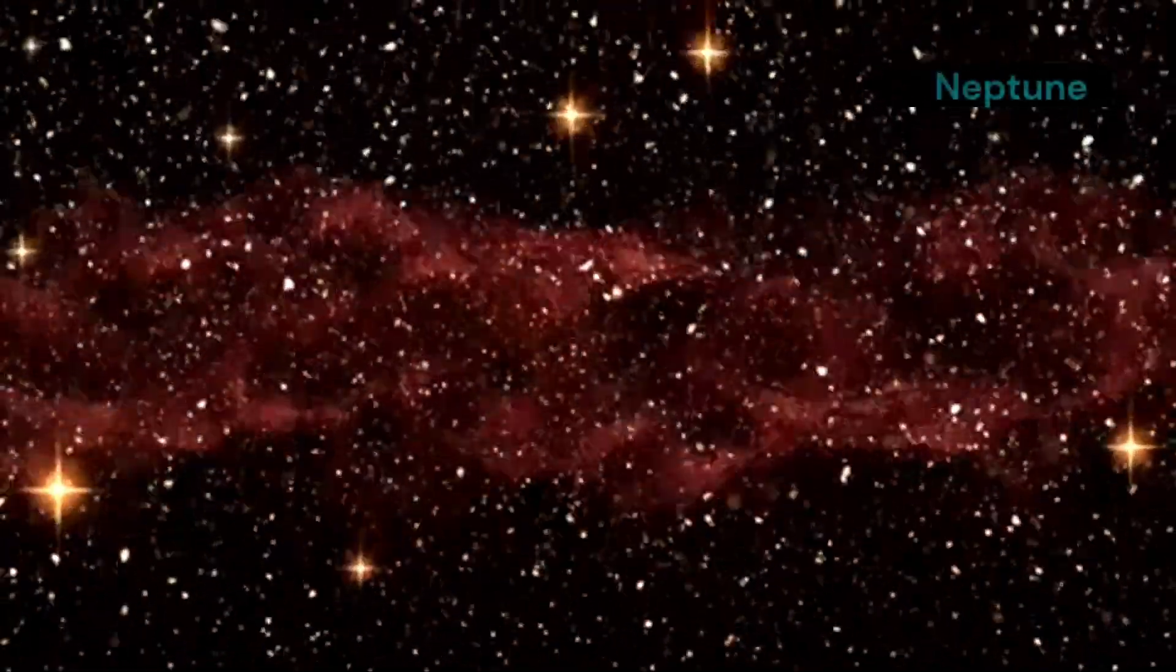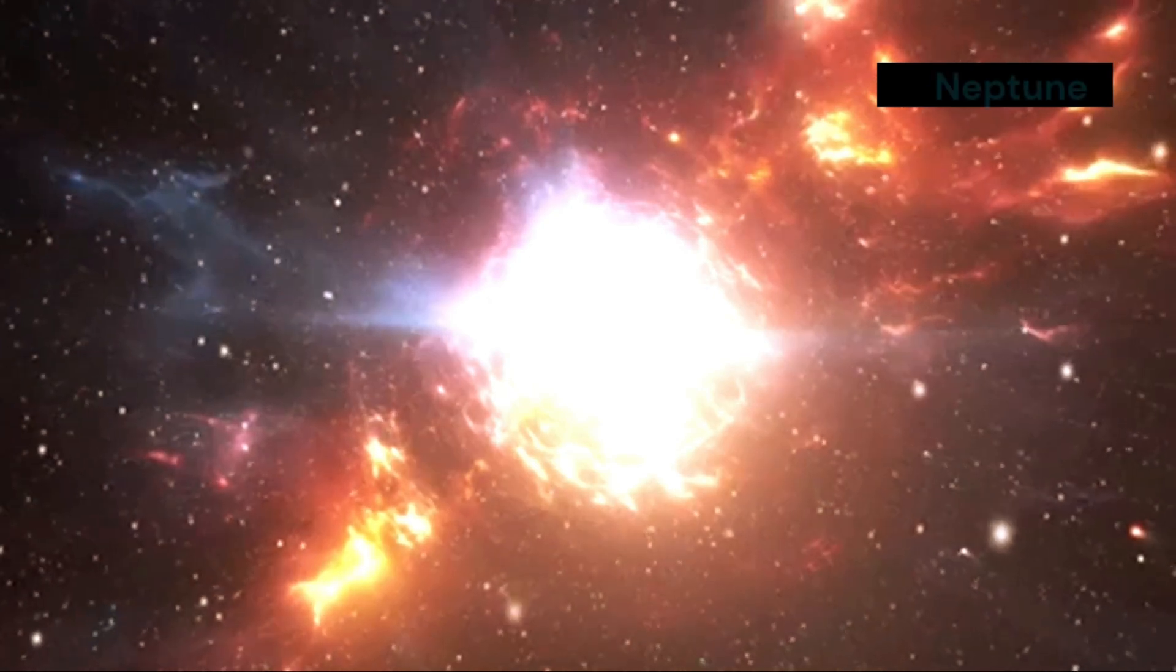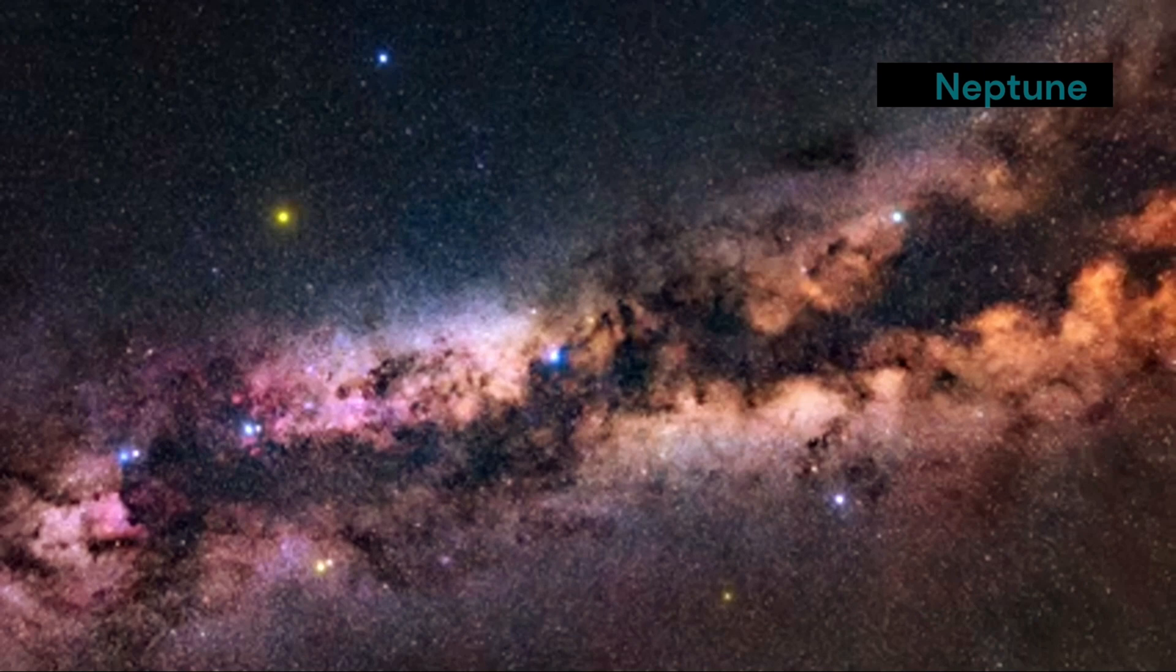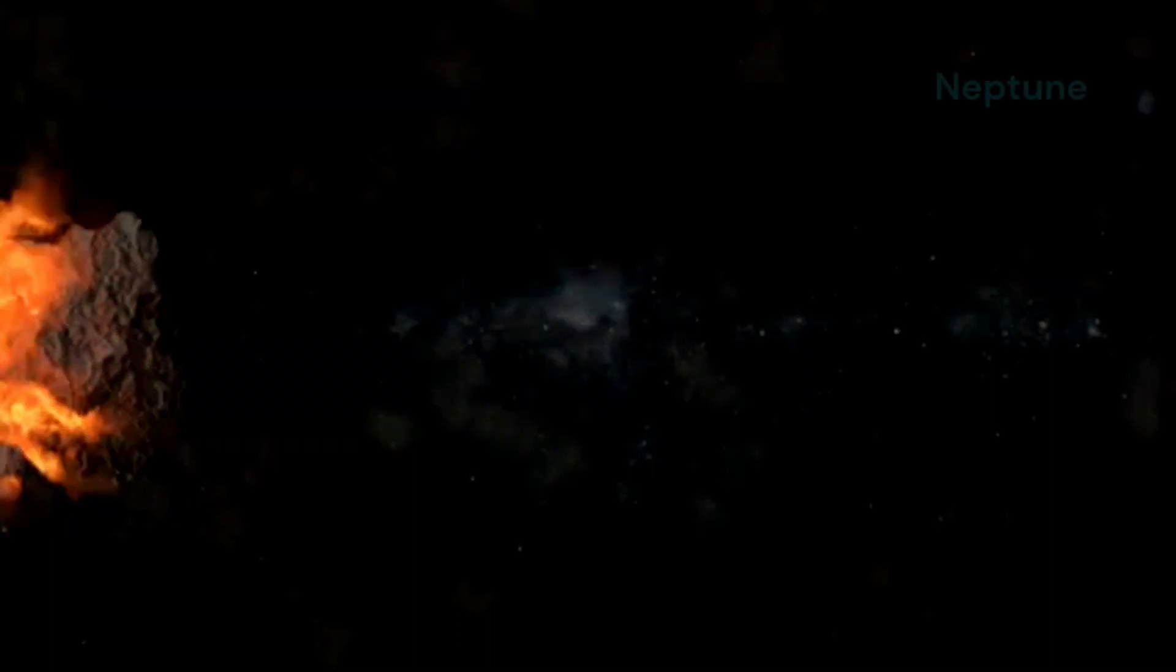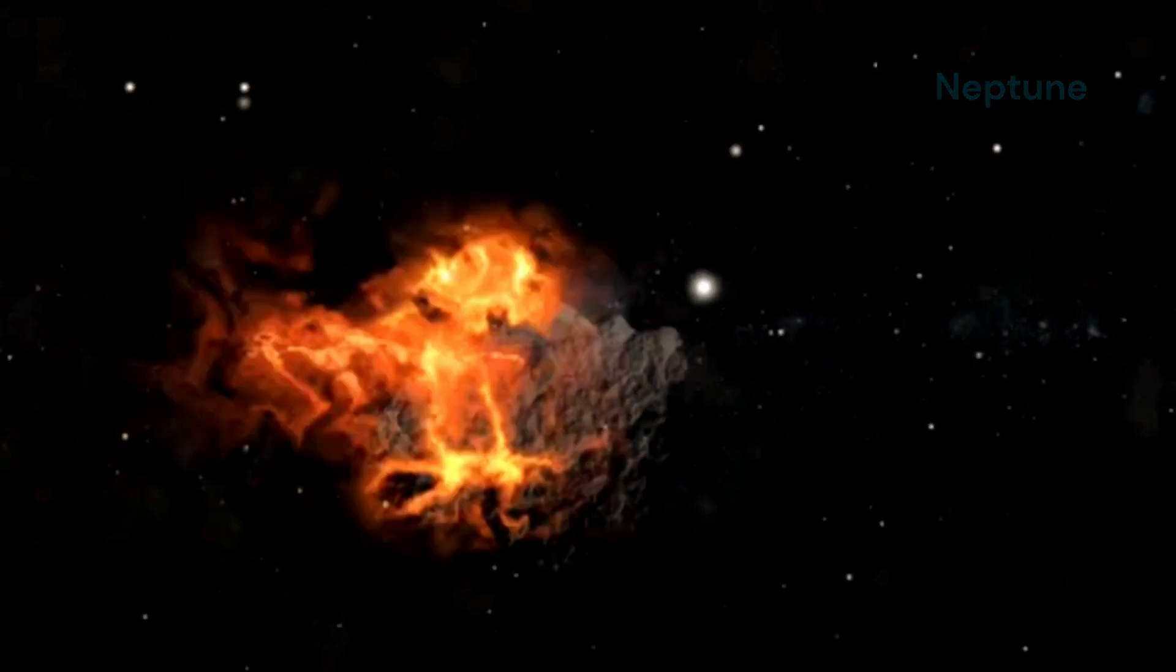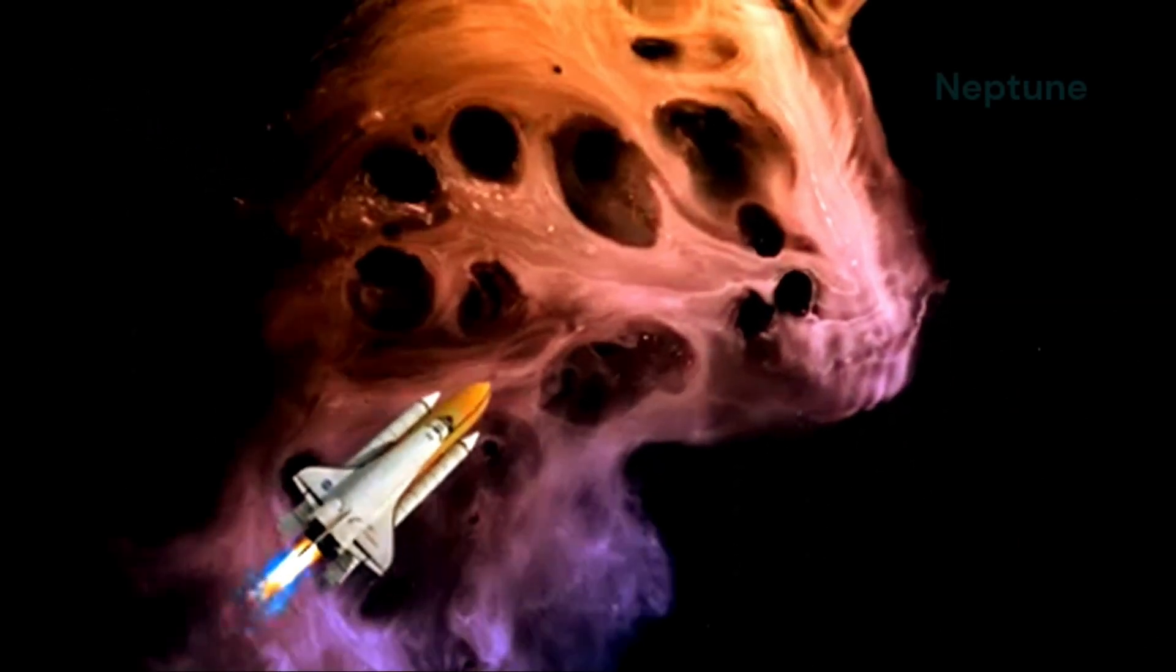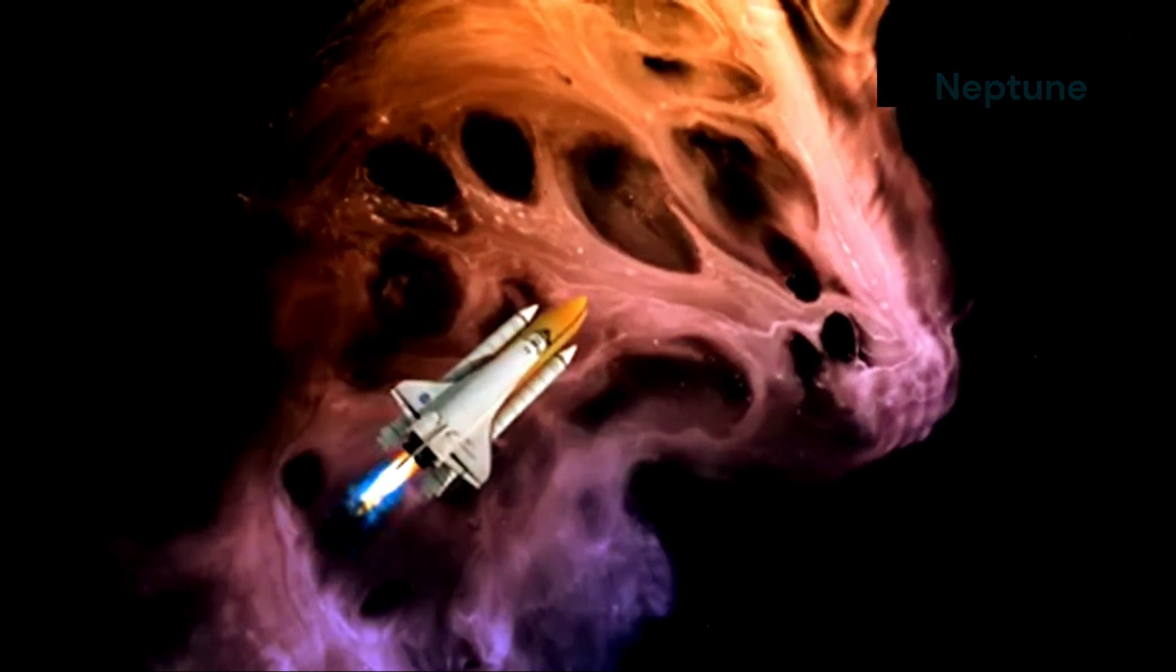A universe in motion: the legacy of the Neptune collision. The collision on Neptune is a reminder that the universe is a dynamic and ever-changing place. It is a place where even the most distant objects can be affected by events that occur billions of miles away. The JWST is giving us an unprecedented view of this dynamic universe. It is allowing us to witness events that have never been seen before. The data it collects will continue to shape our understanding of the cosmos for generations to come. The JWST's findings are a testament to the ever-changing nature of the cosmos. What other surprises lie hidden in the cold expanse of space? Stay with us for more exciting discoveries. Don't forget to like, share, and subscribe for future updates.